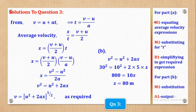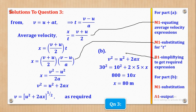For the mark scheme: M1 is for the step of equating the average velocities, another M1 is for substituting for T, and a further M1 is for simplifying to get the required expression. In part B, M1 is for the substitution step and A1 is for the correct output. That's how the 5 marks come about.